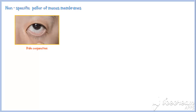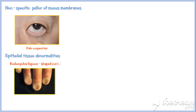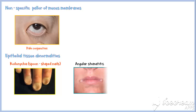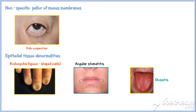Anemia produces nonspecific pallor of mucous membranes. A number of epithelial tissue abnormalities are seen with iron deficiency anemia, including koilonychia or spoon-shaped nails, angular stomatitis, glossitis, esophageal webbing, and gastric atrophy.